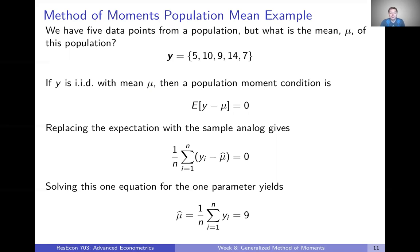Let's go back to that intuitive example that we started with. Suppose we have five data points from a population: 5, 10, 9, 14, 7, and we want to know the mean of the population.